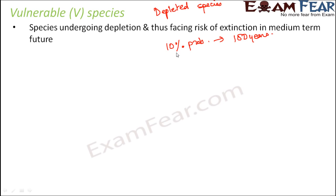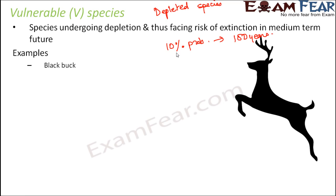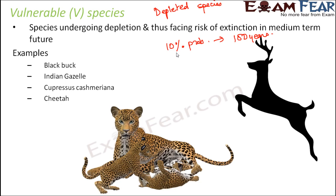Around 34 to 51% of all threatened species are vulnerable — that means almost half. Examples of vulnerable species include the black buck, Indian gazelle, Cupressus cashmeriana, and cheetah. These species may not become extinct immediately but there are chances of extinction in the mid-term future.